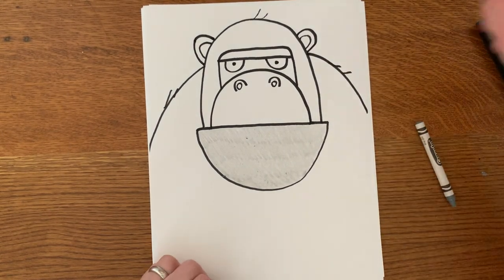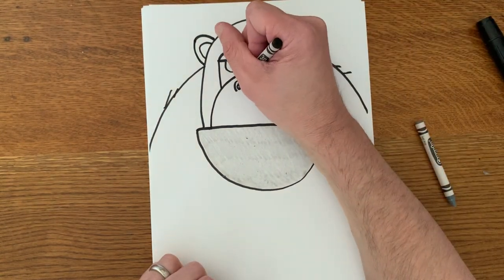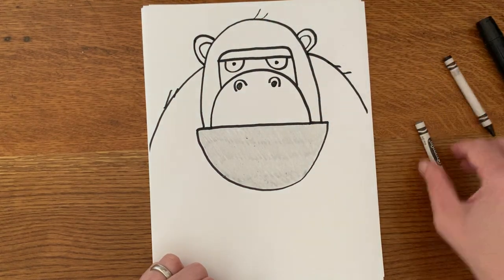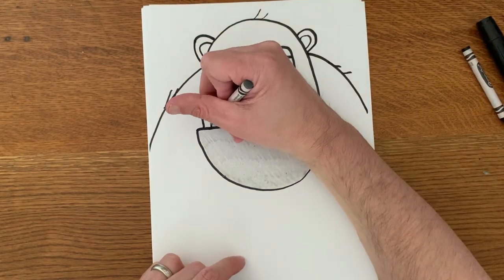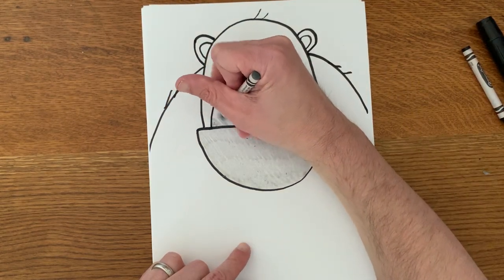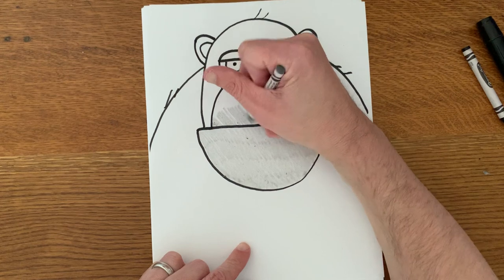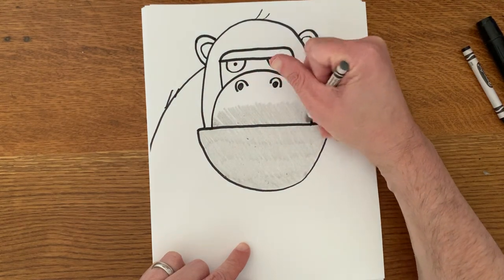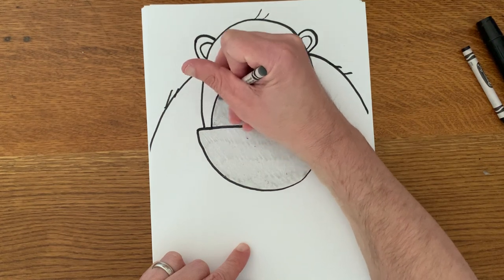All right, now I'm going to go ahead and color in his nostrils just so that I can easily color over now with gray. So I can go quickly and even if I go over those black nostrils with the gray, it won't matter because you won't be able to tell.